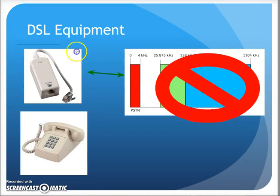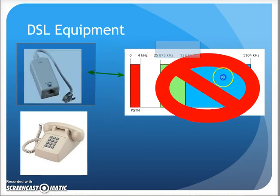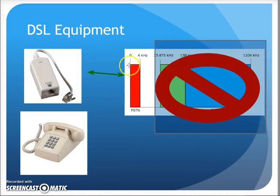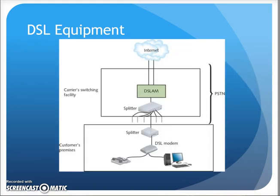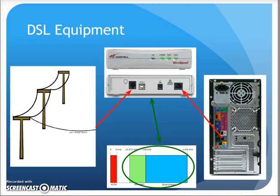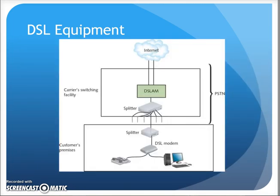The splitter's job is to filter out the higher frequency band so that only voice traffic goes to the phones — it acts like a band-pass filter. So that was your DSL connection. Many people use this for homes and even businesses. Next we'll come back and talk about cable internet.